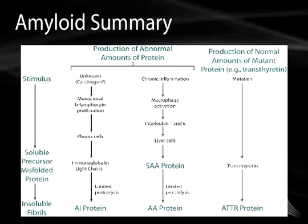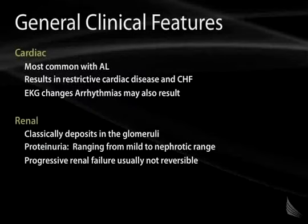Yet another way in which amyloid can be deposited is through the production of normal amounts of a mutant protein — an example being transthyretin. In terms of what one will see clinically in patients with amyloidosis, there are several classic sites of deposition that you may be tested upon in USMLE Step 1.